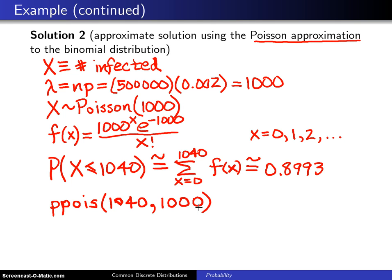So again the Poisson approximation works well here and it works well because n is large and p is small, that's when the Poisson does the best job of approximating the binomial.